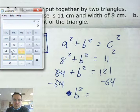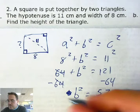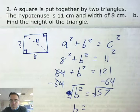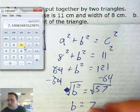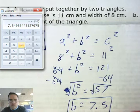So we're left with b² = 57. Taking the square root of both sides, b equals 7.54, so rounding to the tenths place that's 7.5 centimeters.